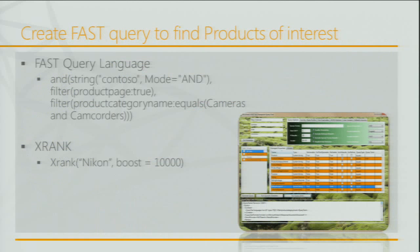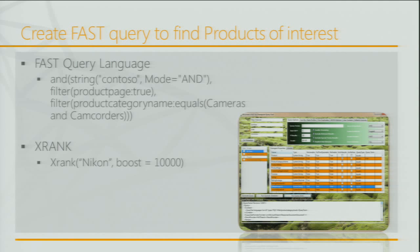The next step is to create managed properties and map one or more crawled properties to them — essentially managing properties at a higher level of abstraction. Managed properties become the sort fields or refiners. Once created, they are automatically mapped into the FAST index, so the next crawl populates that data. To retrieve information, we use FAST Query Language, or FQL. FQL can perform exact searches and narrow the scope to specific managed properties. It can contain nested sub-expressions and various operators, including the X-Rank operator, which can boost a result — for example, a Nikon camera by 10,000 points. FQL and X-Rank are must-have tools for developing adaptive, engaging search-driven applications.